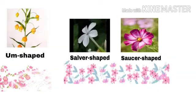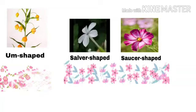Sixth one: salver-shaped. In this, the flower has a long thin tube at the base and the petals widen into a flat face. Seventh one: urn-shaped. This flower's shape is a little different — it is just like a globe. You all must have seen the globe of the earth. The shape is totally like a globe and it is fused at the bottom.